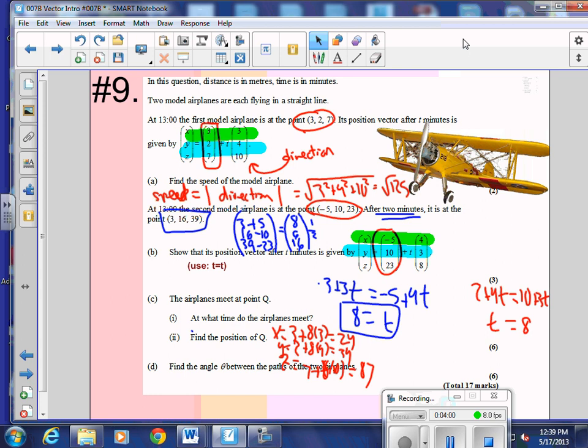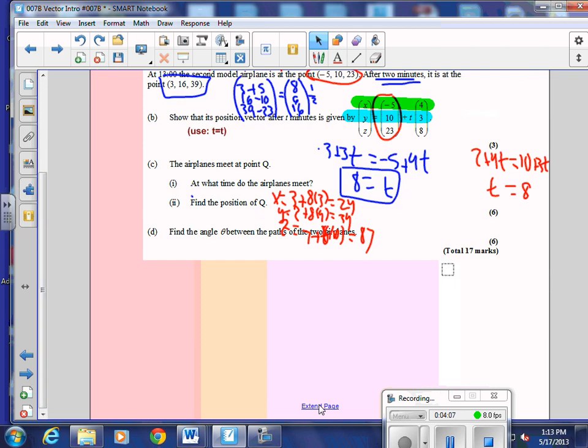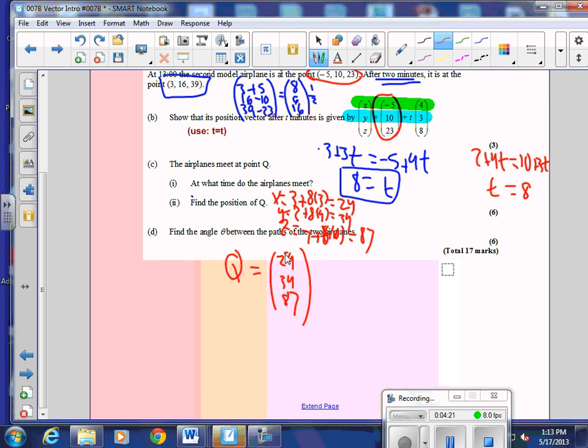We'll finish this one off when you get back. All right, so what we're going to do last, we found the time. We found the position by putting that 8 in for t. And so the position is 24, 34, 87, I believe. That's point q.